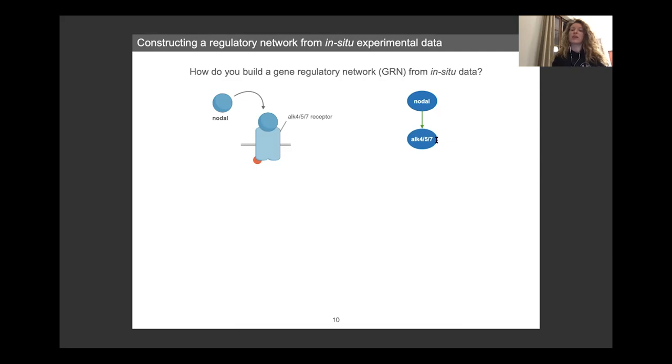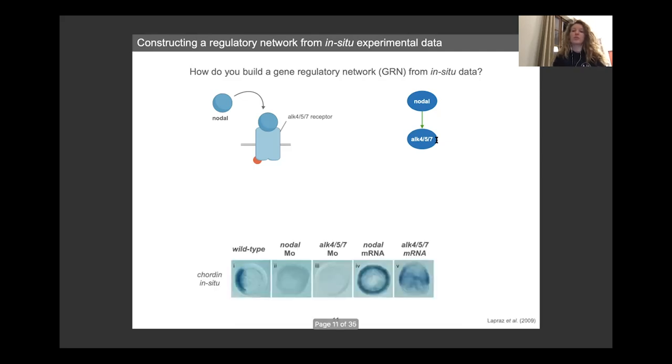And based on the in-situ experiment, we can add new elements to the model. So for example here, in this different set of in-situ experiments, you can see the expression of chordin, which is ventrally expressed in wild-type condition. But you can also see that upon a loss of function of either nodal or its ALK receptor, you lose chordin expression. And reversely, if you overexpress nodal or its receptor, chordin expression also goes overexpressed. So using this, we can add to the network, chordin, as being downstream of the nodal ALK receptor.